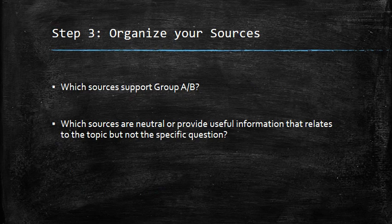Step three: organize your sources. Really step three is simultaneous with step two, because you can't identify the different perspectives until you've looked at your sources and said this group believes X and this other group believes Y. In the process of dividing sources into Group A and Group B, you have to consider what they have in common. You're also going to identify sources that are neutral or provide useful information related to the topic but not the specific question — for example, a historical article that gives important background, which doesn't have a specific agenda for one side or the other.